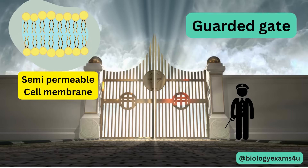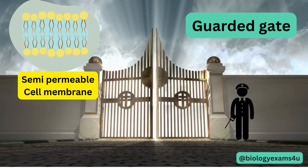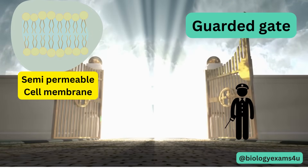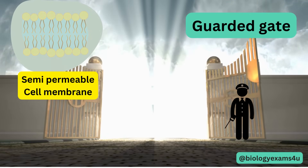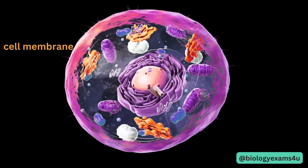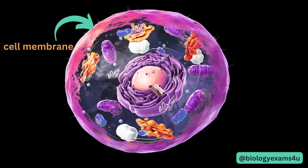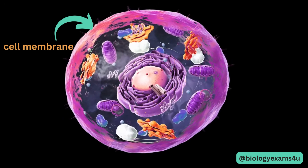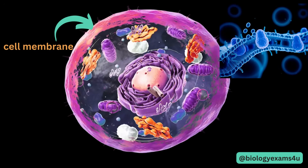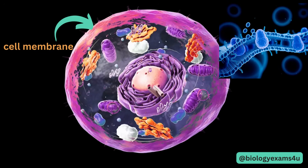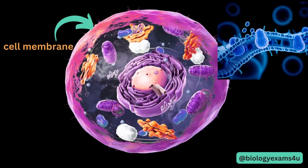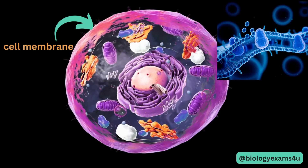The cell membrane is analogous to the guarded gate of a factory, where credentials are checked before entry. It is a semi-permeable membrane of the cell that has specialized channels for entry and exit of molecules, guarded by proteins. It is present in all types of cells, that is in both prokaryotes and eukaryotes.